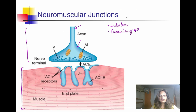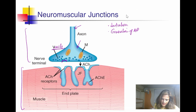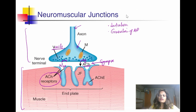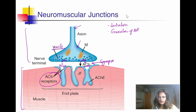Once the action potential is generated, vesicles containing acetylcholine fuse with the neuronal membrane, causing exocytosis of acetylcholine at the synapse. Post-synaptically, acetylcholine binds to the NM-type nicotinic receptor. Acetylcholine acts through two receptor types — muscarinic and nicotinic. Nicotinic receptors are of two subtypes: NN, present on ganglia, and NM, present at the neuromuscular junction. Here we are concerned with NM receptors, which are ion channel-linked receptors.